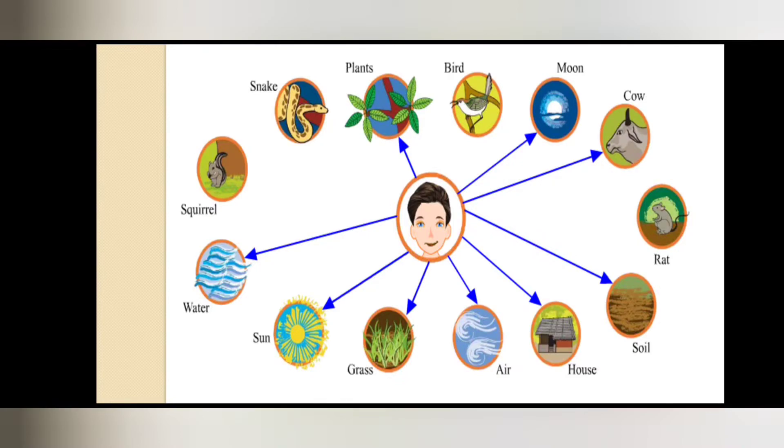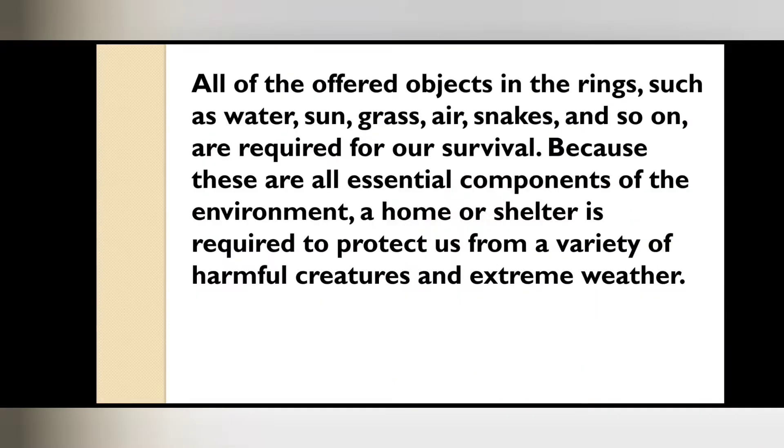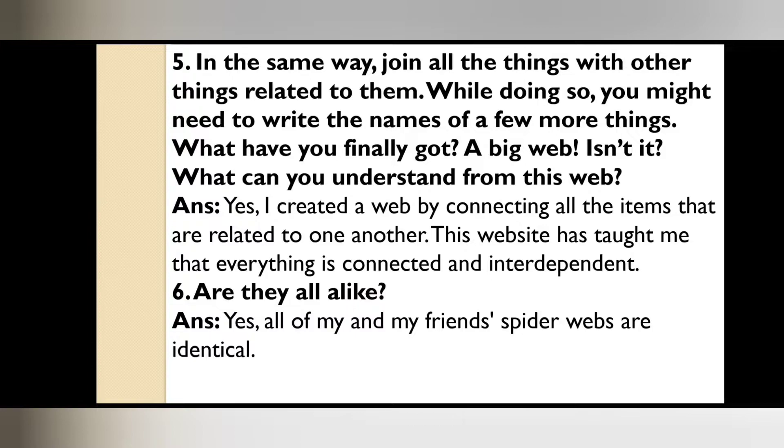As you can see, your friends can also do this. They can make it like this. All of the objects in the ring, such as water, sun, grass, air, snakes, and so on, are required for our survival because these are essential components of the environment. A home or shelter is required to protect us from a variety of harmful creatures and extreme weather.